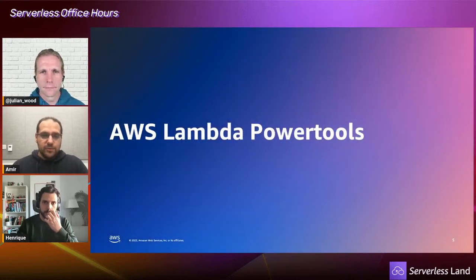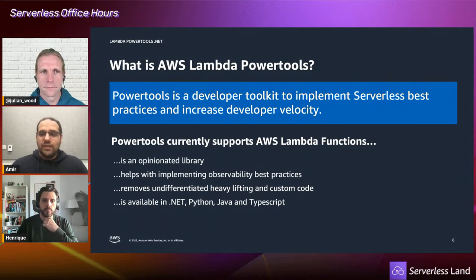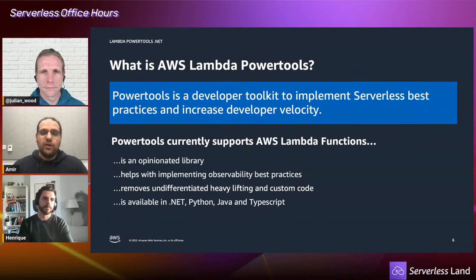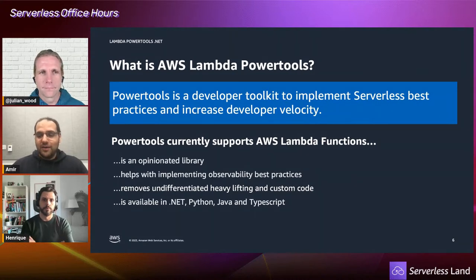AWS Lambda Power Tools is a suite of utilities that helps you adopt best practices such as tracing, structured logging, and custom metrics, and more. It abstracts away the undifferentiated heavy lifting, frees you from writing unnecessary custom code, and provides a clear, easy-to-understand API. It's available in multiple languages — it initially launched in Python, and is also available in Java and TypeScript. The latest addition to the family is .NET, which we're here to talk about today.